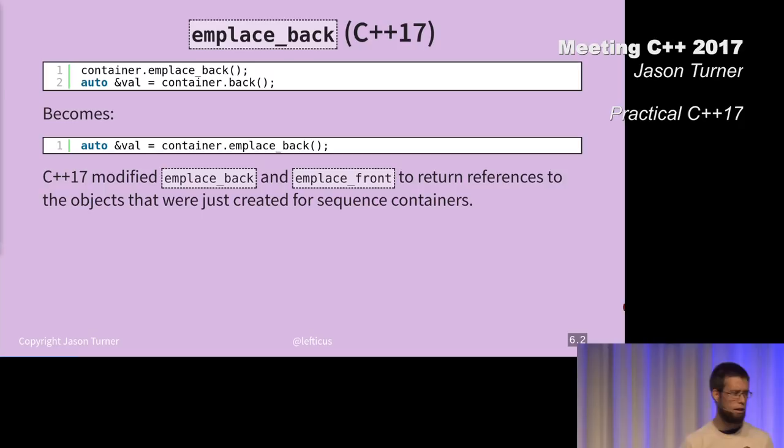For containers that have emplace back and emplace front, they now return a reference to the object that was created instead of returning void. That's like a really trivial thing, but it kind of follows along with the mindset of the standard library right now to say, if something has already been calculated and it's possible to return it, then let's go ahead and return it.